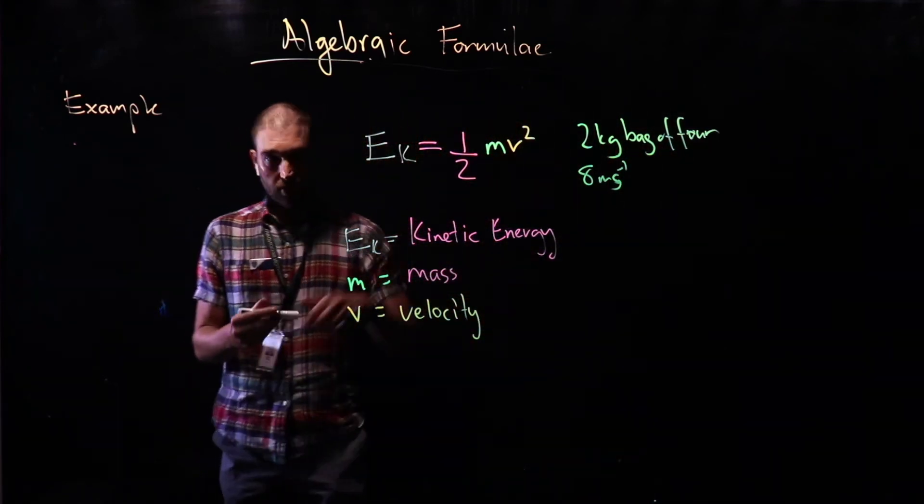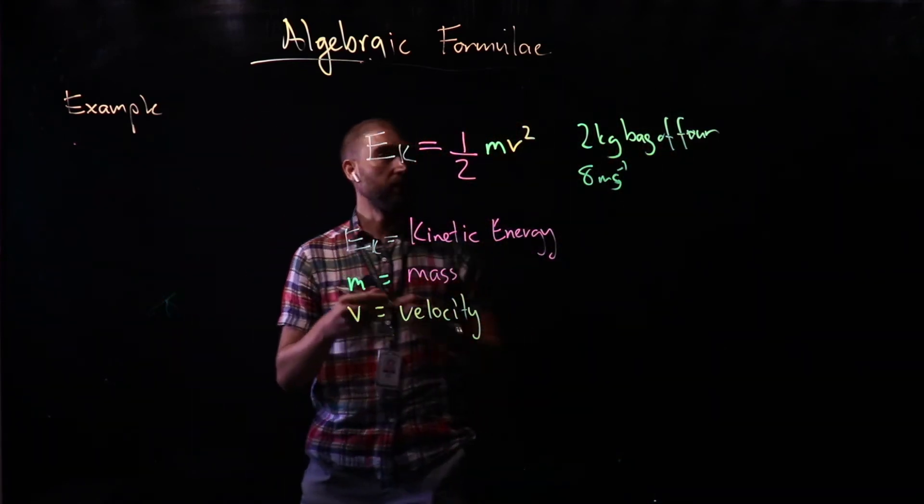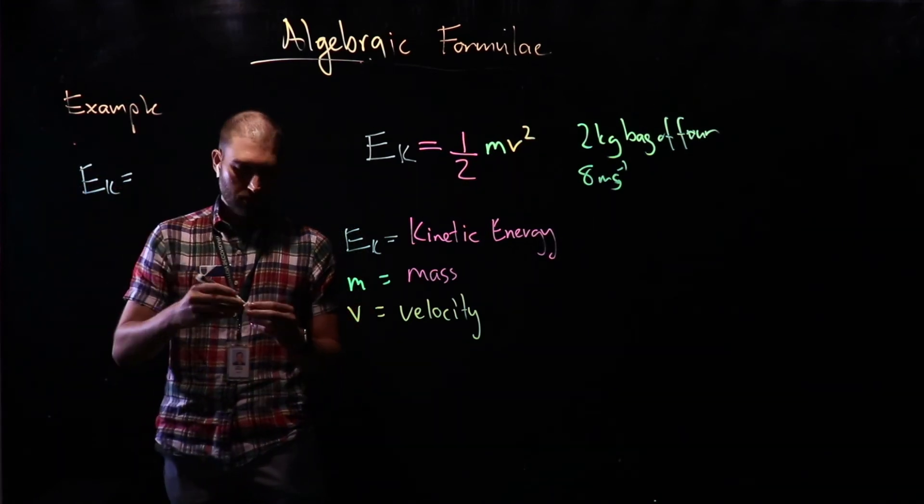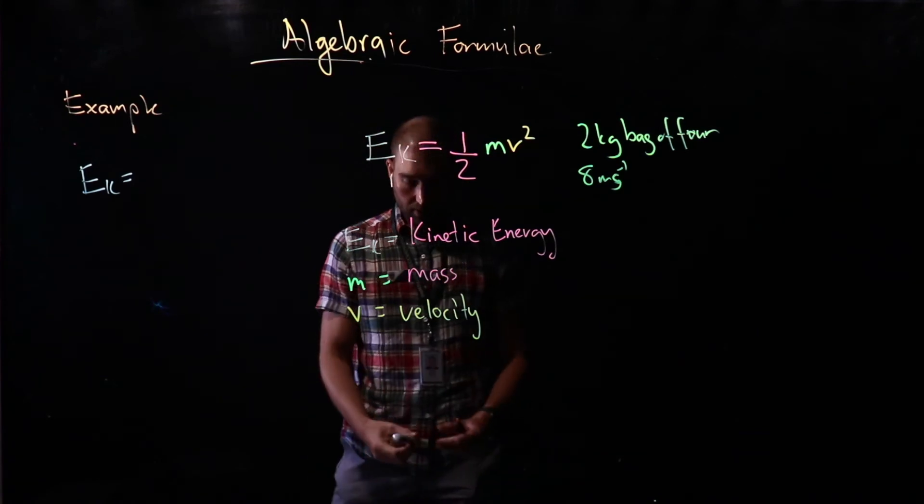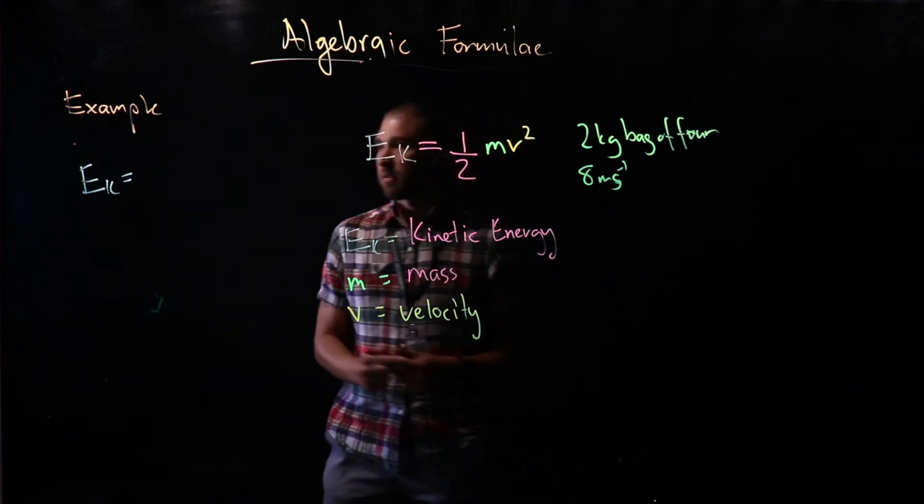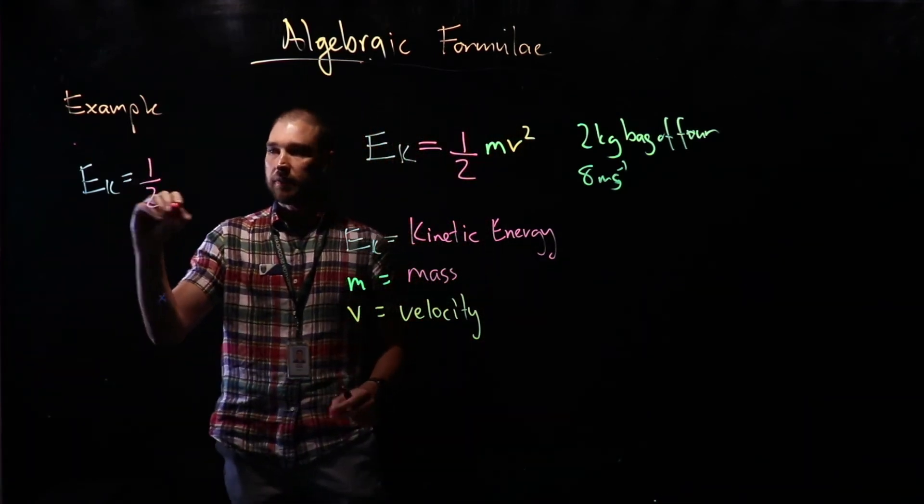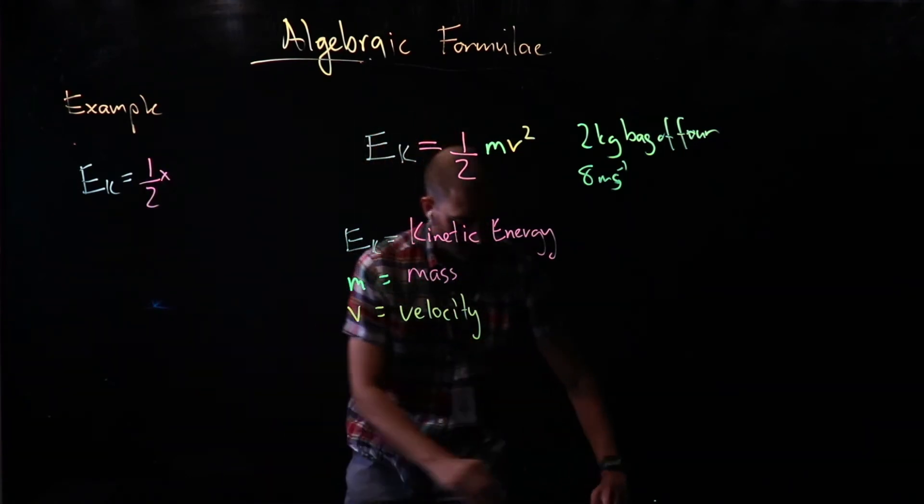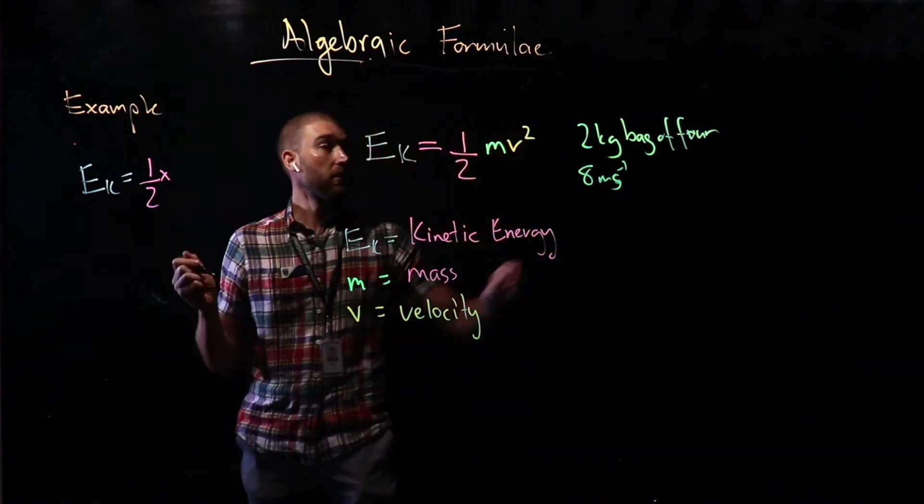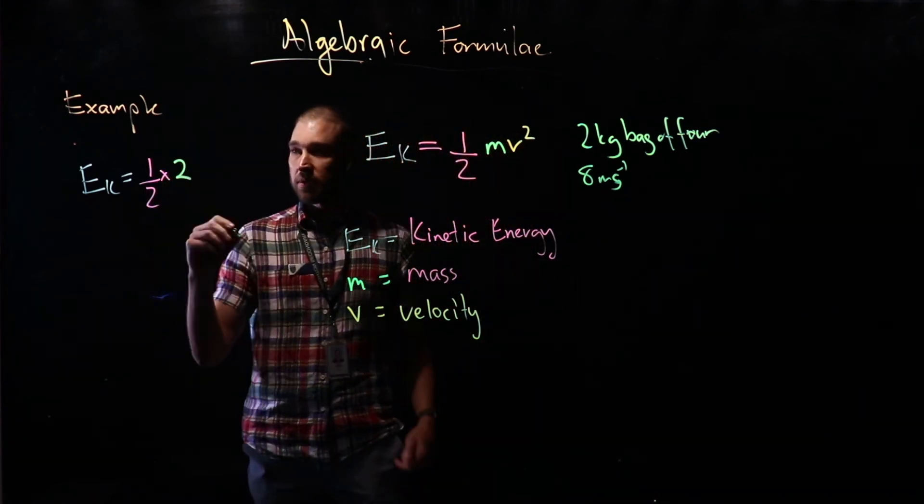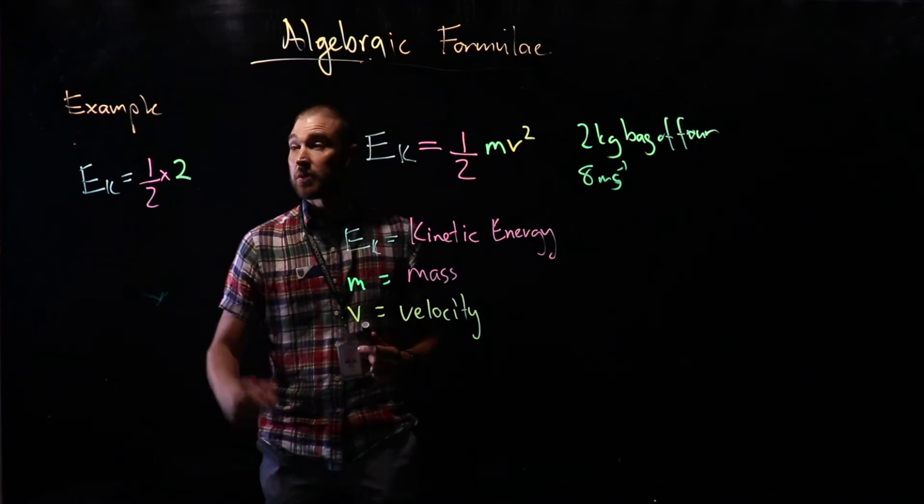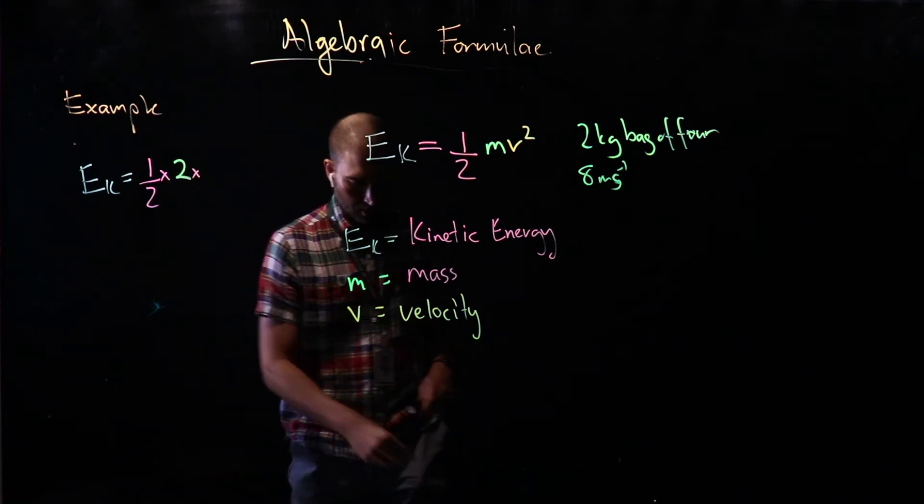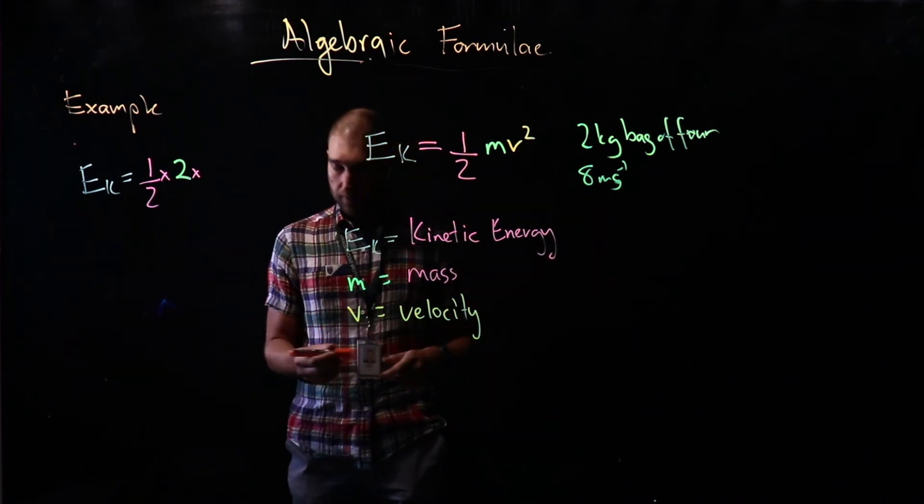Ek equals... I'll go to pink. We've got half times the mass. Now, the mass was in green. Our mass is 2 kilograms. And we're going to multiply that by the velocity, which was 8.